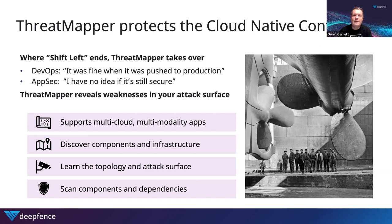Just because applications are fine when they leave development and move into production, that does not guarantee there are no weaknesses in your attack surface. ThreatMapper exists to help give you the confidence to discover what is running within your production platforms — the components and the infrastructure — to learn the topology of those complex, multi-tiered cloud-native applications, and from that topology deduce the attack surface. Which components have the greatest exposure to being exploited? ThreatMapper then scans those components against up-to-date vulnerability lists, looking for weak spots, weak dependencies, and vulnerabilities.